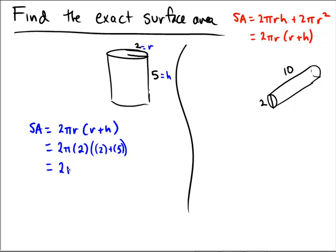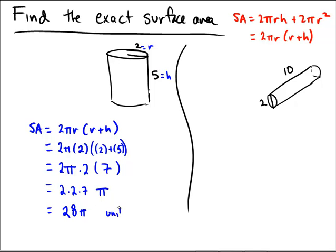Simplifying: 2 × π × 2, and 2 + 5 = 7, so we have 2 × 2 × 7 × π. Using commutativity and associativity of multiplication, 2 × 2 = 4 and 4 × 7 = 28. So the surface area is 28π square units. Since we're finding the exact value, we don't need to approximate π.